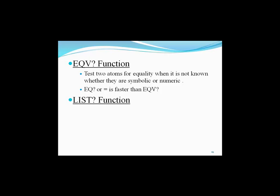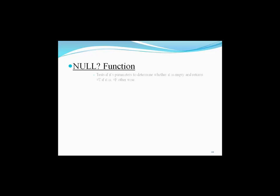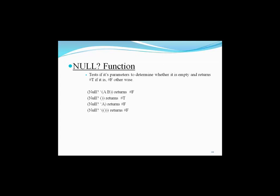The list? function returns true if its single argument is a list, false otherwise. The null? function tests its parameter to determine whether it is an empty list, returning true if it is, otherwise false. For example: (null? '(a b)) returns false since (a b) is not a null list; (null? '()) returns true since the list is empty; (null? 'a) returns false since this is an atom, not a list; and (null? '(())) returns false since there is a sub empty list.